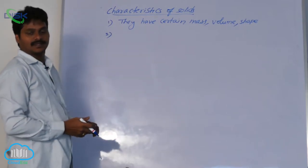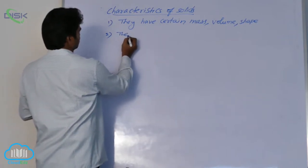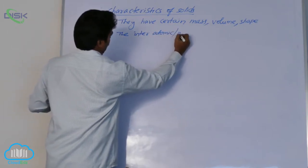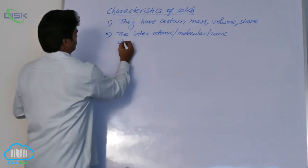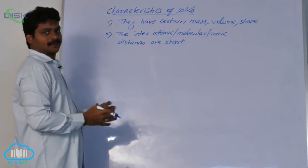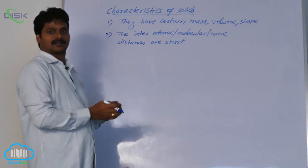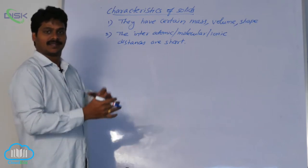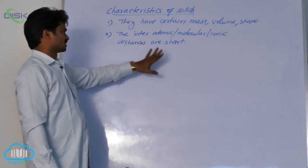Second one, in solids, the interparticle distances are shorter. Interparticle distances means the interatomic, molecular, or ionic distances are shorter. In solids the interparticle distances are shorter, whereas in liquids it is somewhat longer. In gases, the particles move randomly in different directions, so molecules are far apart from each other, whereas in liquid and solid states, interatomic distances are very short.